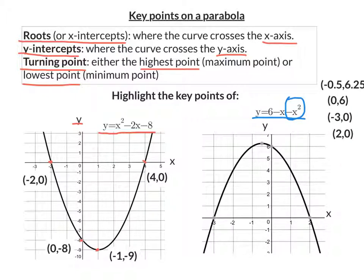So let's find its key points. So its roots are where it crosses the x-axis. So it crosses the x-axis here and here. And they would have coordinates of 2, 0 and negative 3, 0.